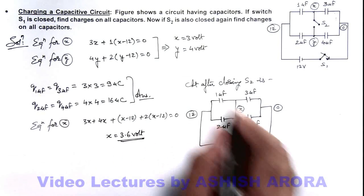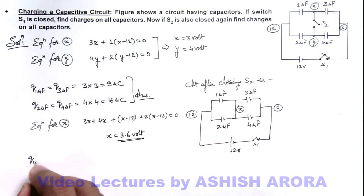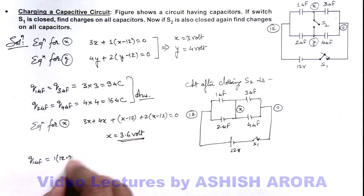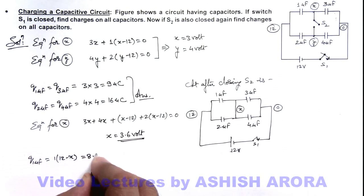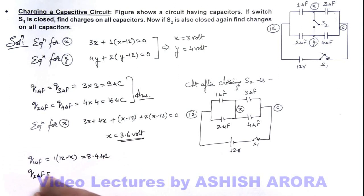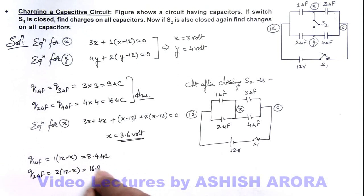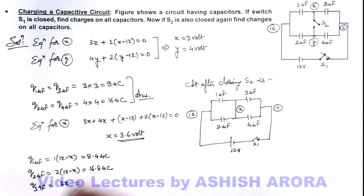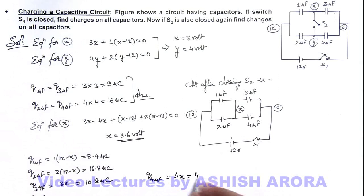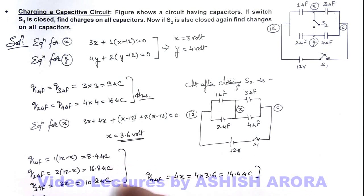With x equal to 3.6 volts, we can write all charges: charge on the 1 microfarad capacitor is 1 multiplied by 12 minus x, giving 8.4 microcoulombs. Charge on the 2 microfarad capacitor is 2 multiplied by 12 minus x, giving 16.8 microcoulombs. Charge on the 3 microfarad capacitor is 3x, giving 10.8 microcoulombs. Charge on the 4 microfarad capacitor is 4x, giving 14.4 microcoulombs. These are the answers to this problem.